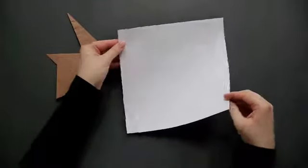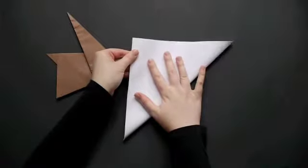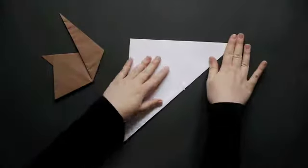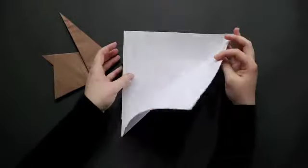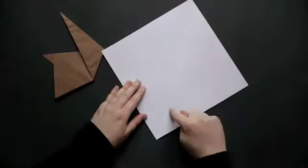First we're going to make a taco fold. So I'm going to make my corners neat. Then I'm going to unfold my paper again. But I have this crease down the center.